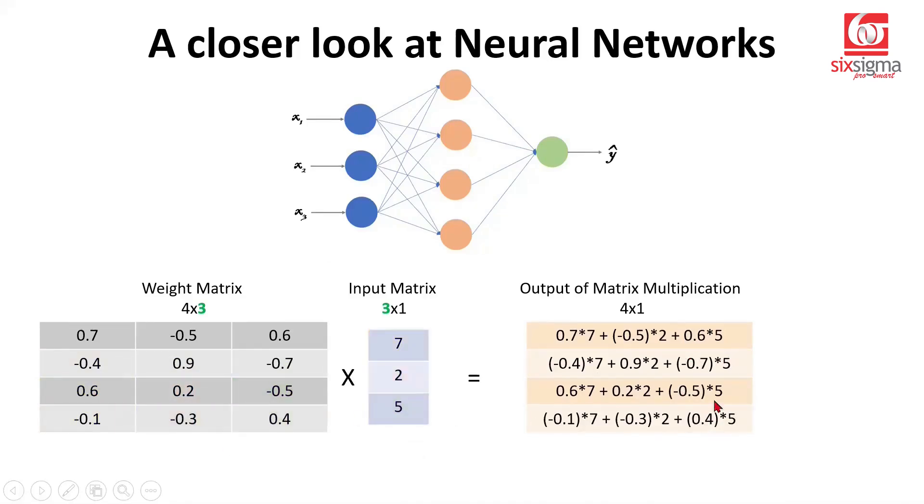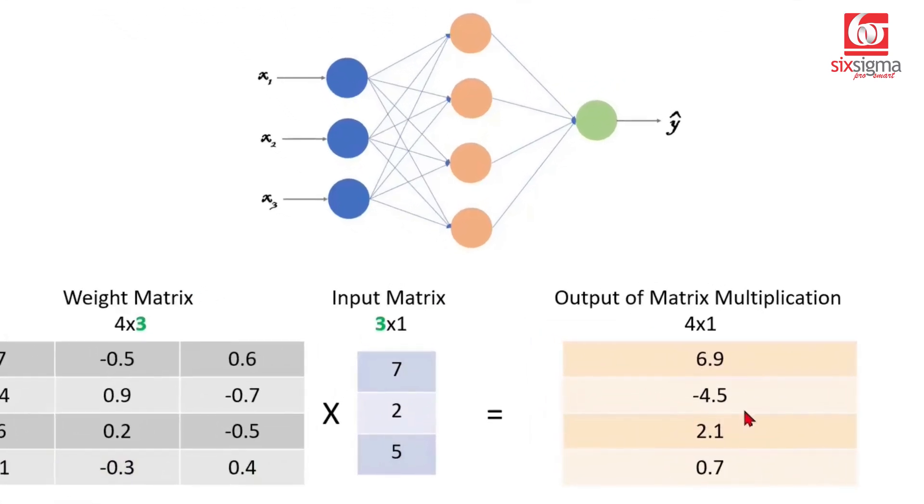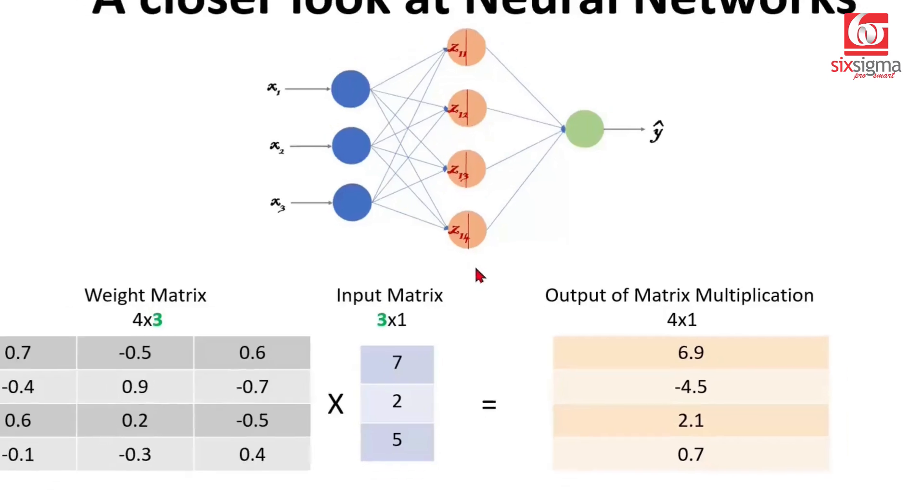Now once we do these calculations and simplify this expression, here is how the output would be. So we're getting the output as 6.9, negative 4.5, 2.1 and 0.7. But what do these represent? These are the aggregations that are happening at the hidden neurons. So 6.9 is this aggregation here, negative 4.5 is the aggregation here, so on and so forth.